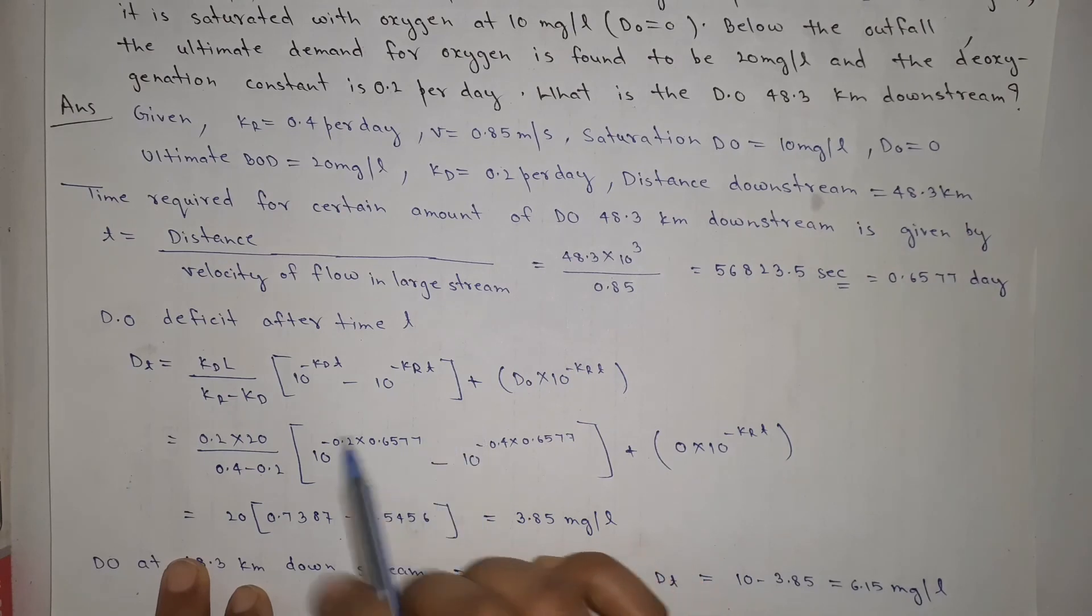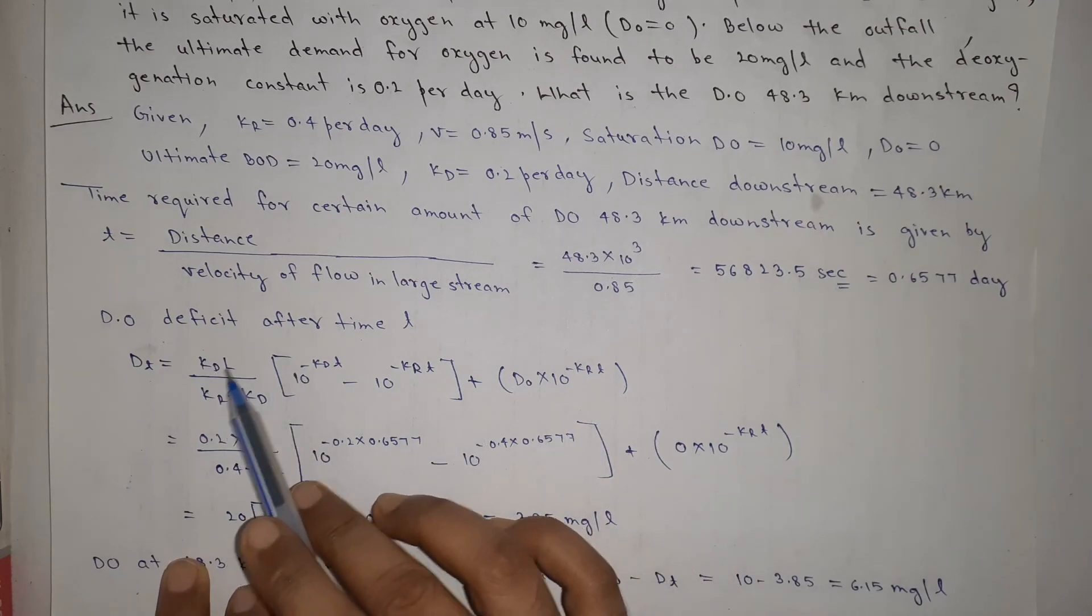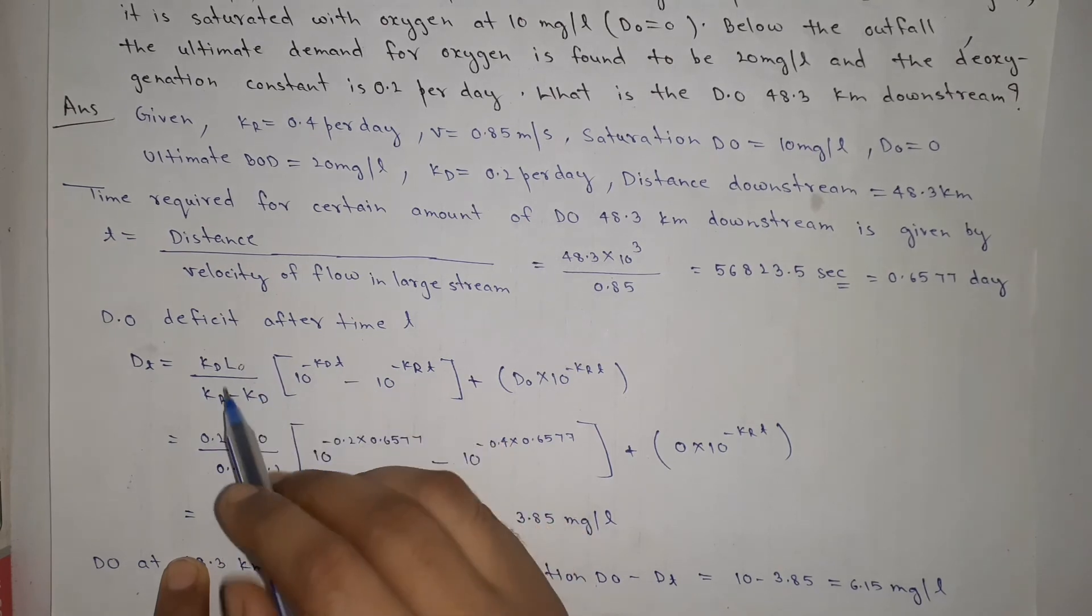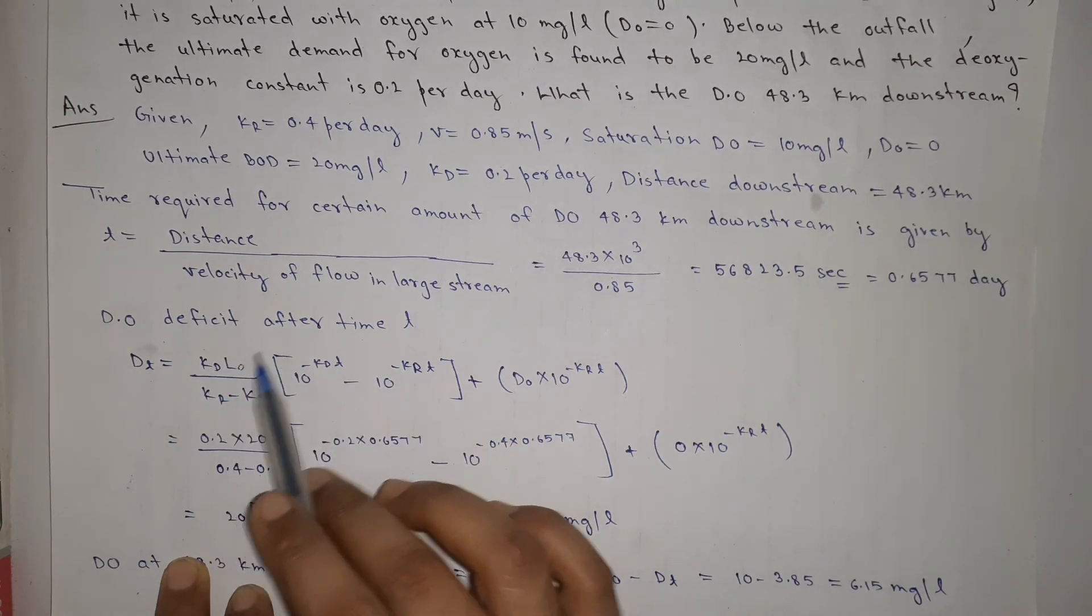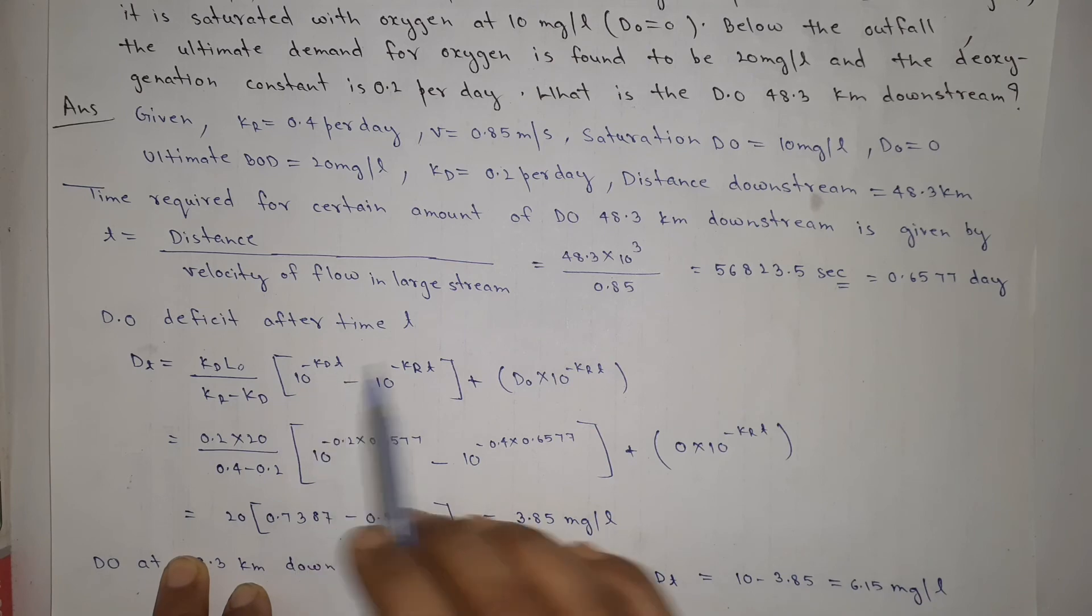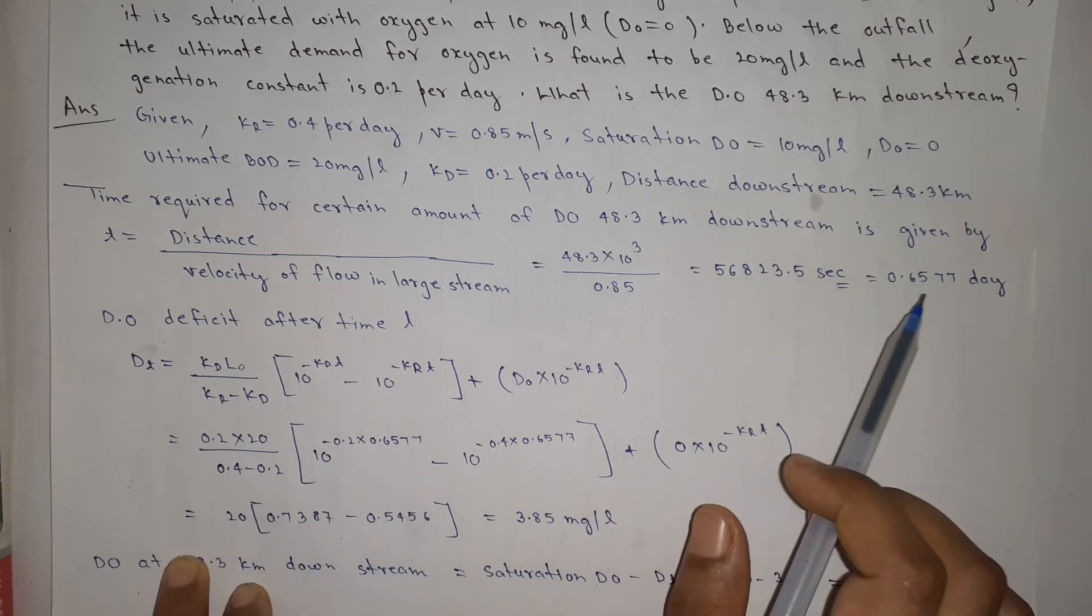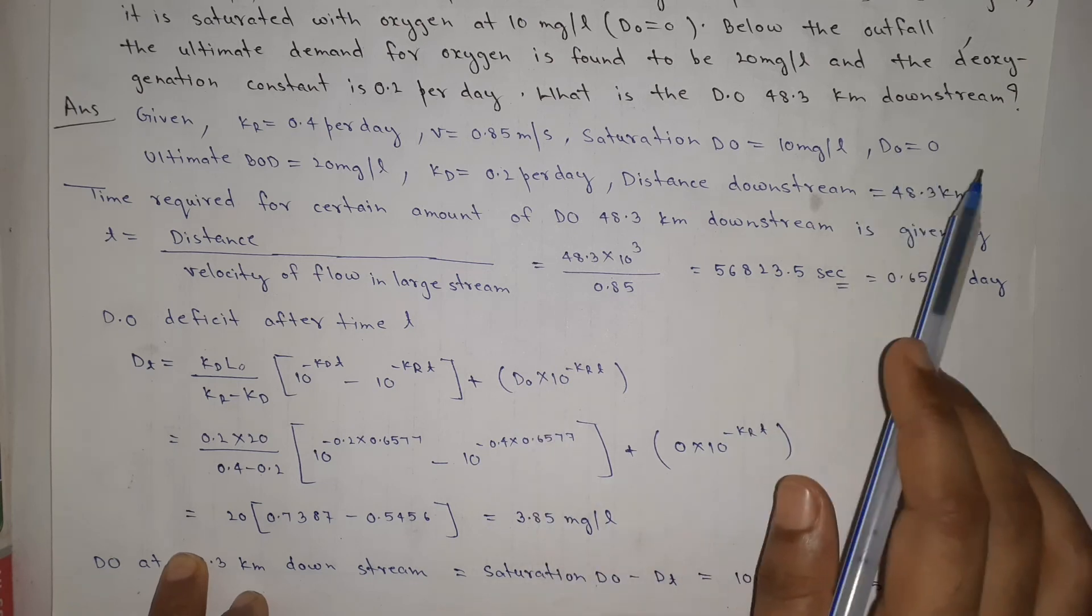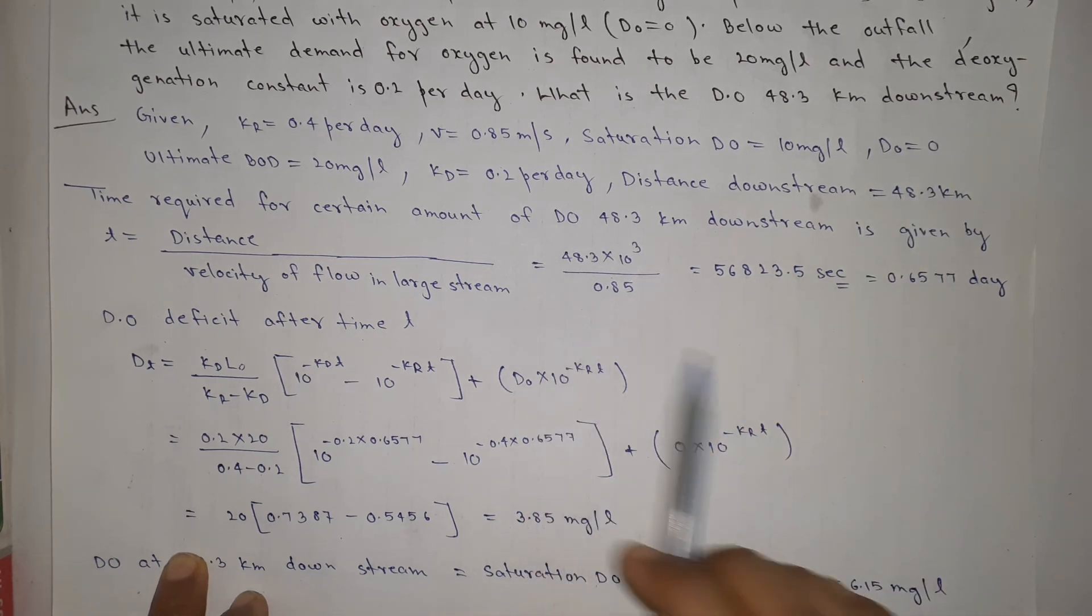In this equation, we will put everything. KD value, L0, ultimate BOD of mix is 20, KR is 0.4, and T is 0.6577. D0 means initially oxygen deficit is zero. After putting all the values, we get 3.85 mg per liter.